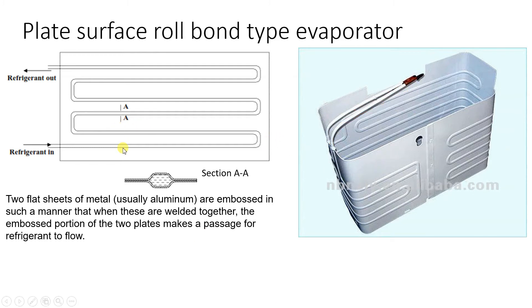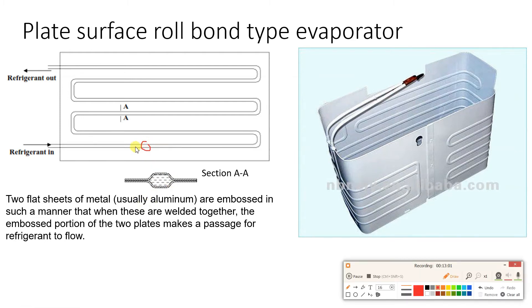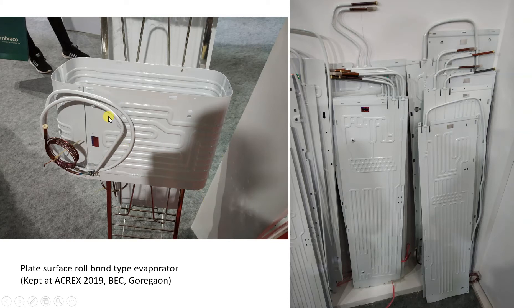Looking at the cross-section, the inflated passage is not exactly a tube — it is a passage formed between two aluminium sheets. Inside this passage the refrigerant flows. The roll bond evaporator is initially manufactured as a flat straight sheet and then bent into a box shape, after which it is fitted into the freezer compartment of the refrigerator.